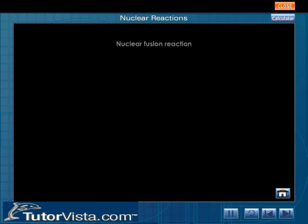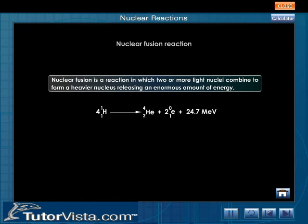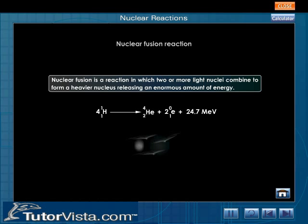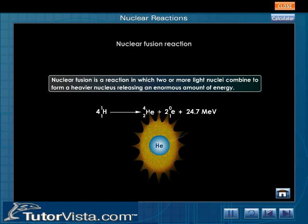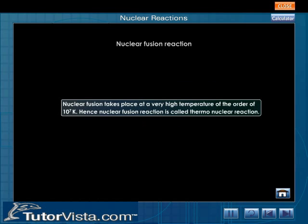Nuclear fusion reaction is a reaction in which two or more light nuclei combine to form a heavier nucleus, releasing an enormous amount of energy. Nuclear fusion takes place at a very high temperature of the order of 10 to the power 7 K. Hence, nuclear fusion reaction is called a thermonuclear reaction.